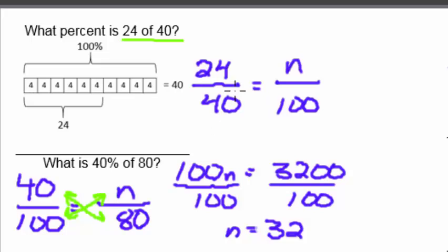The technique we use is called cross-multiplying and dividing. If we take this 40 times that n and rewrite this as 40n equals 100 times 24 or 2400.